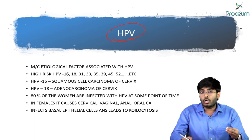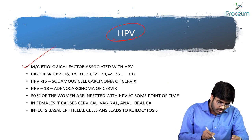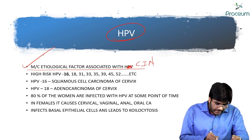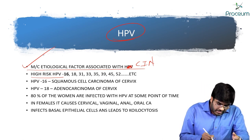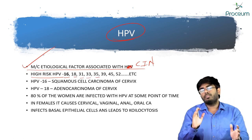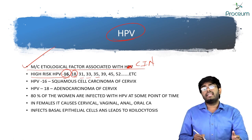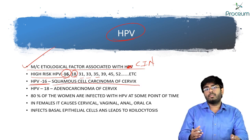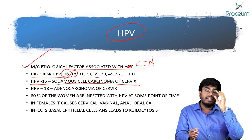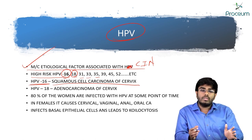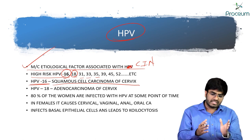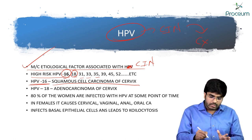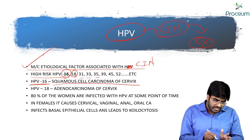HPV is the most common etiological factor associated with CIN. High-risk HPV subtypes include 16, 18, 31, 33, 35, and others. HPV 16 and 18 are the most important. HPV 16 causes squamous cell carcinoma of the cervix, while HPV 18 is associated with adenocarcinoma. HPV is associated both with CIN and cervical cancer — first causing CIN, which can then progress to cervical cancer.